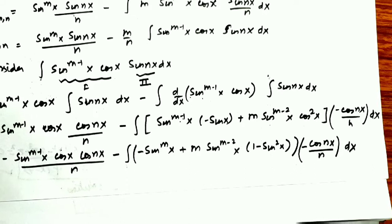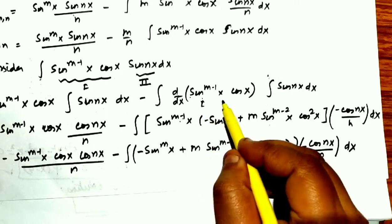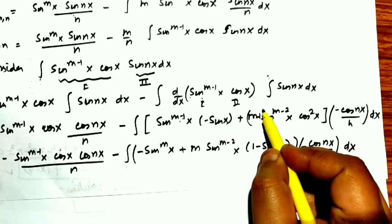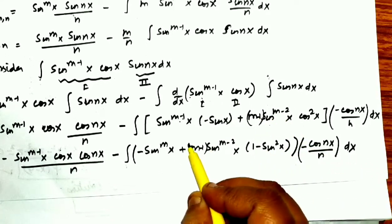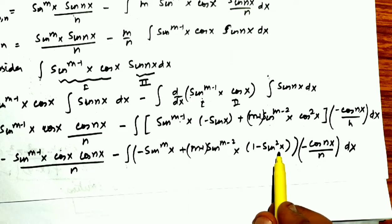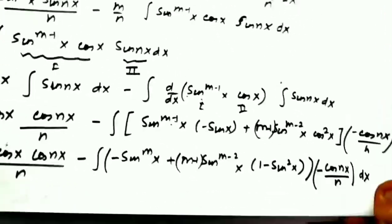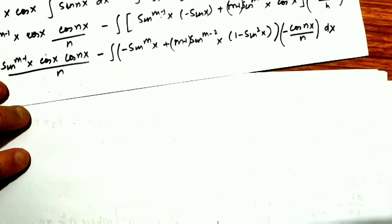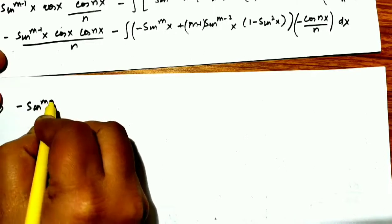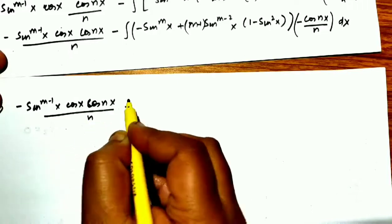We note a correction: the coefficient from differentiating sin^(m-1)(x) is (m−1), not m. So the derivative term becomes (m−1)·sin^(m-2)(x)·cos²(x), and substituting cos²(x) = 1 − sin²(x) gives (m−1)·sin^(m-2)(x)·(1 − sin²(x)). The expression becomes: −sin^(m-1)(x)·cos(x)·cos(nx)/n minus the integral of this corrected expression times [−cos(nx)/n] dx.